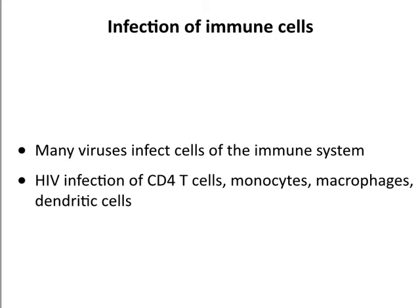Many viruses that cause persistent infection infect cells of the immune system, destroy them, and that allows the viruses to maintain themselves without being eliminated. For example, HIV infects CD4 T cells—the helper cells that instruct T cells to differentiate into CTLs or B cells to make antibodies. They also infect monocytes, macrophages, and dendritic cells, which are incredibly important for presenting antigen and initiating adaptive responses. This virus is infecting all the cells we would need to eliminate it, and that's why it persists.